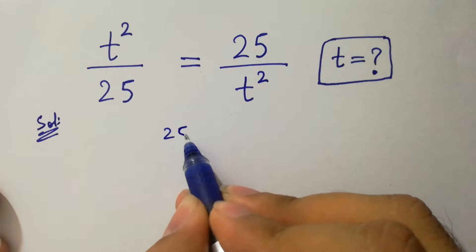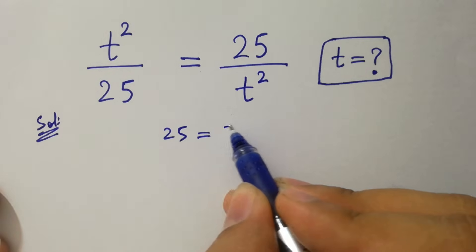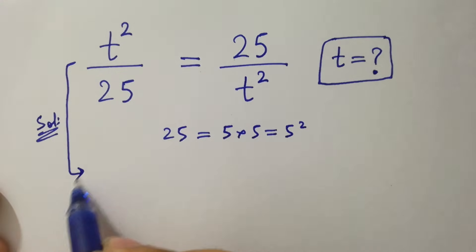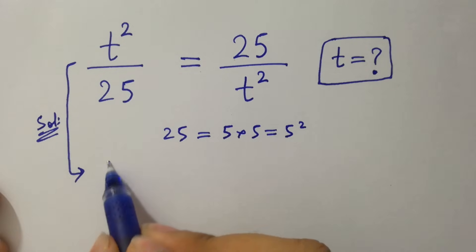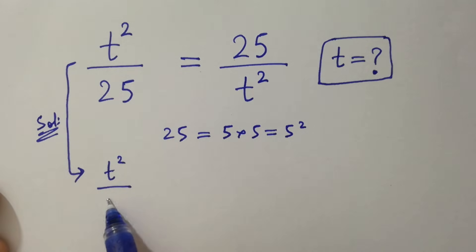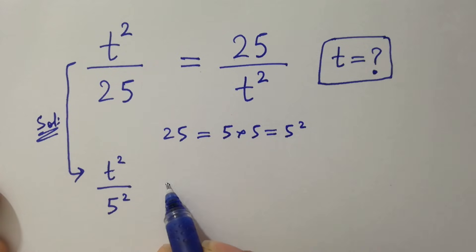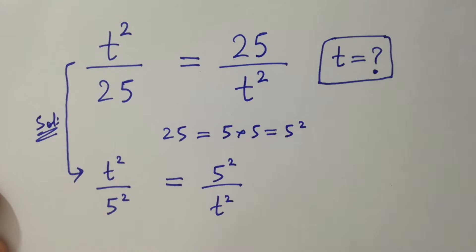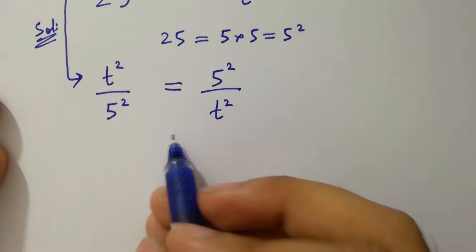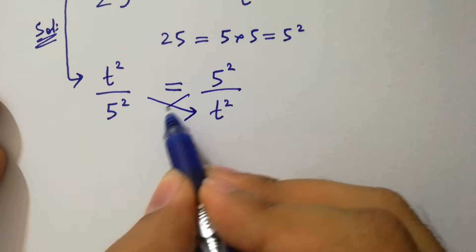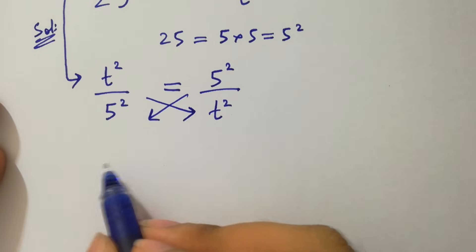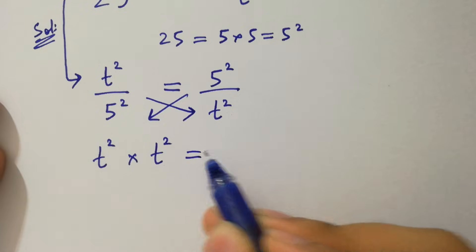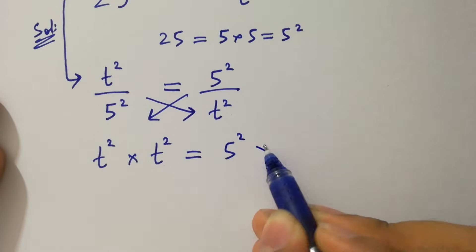Since 25 equals 5 times 5, which is 5², then it will be t² over 5² equals 5² over t². By cross multiplication, we have t² times t² equals 5² times 5².